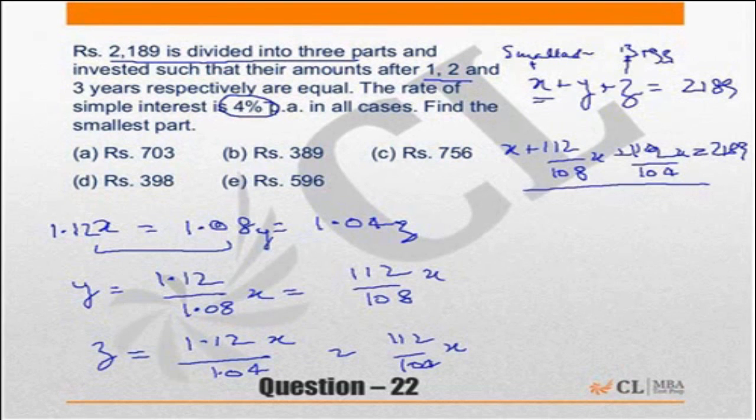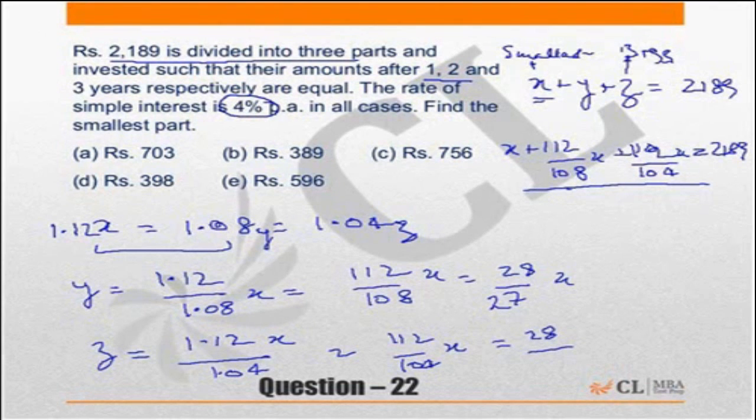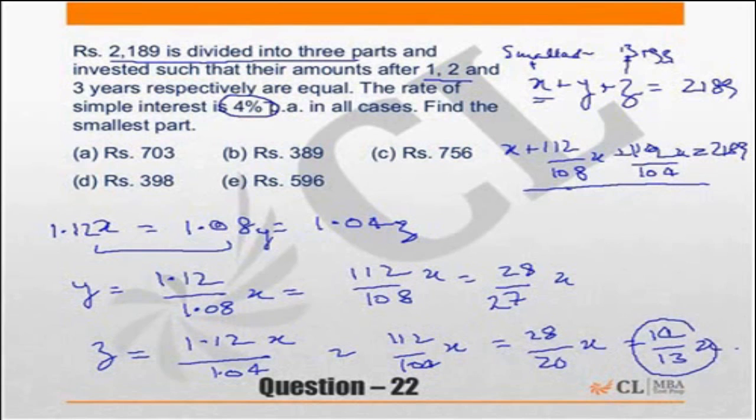Now, obviously if you look at the exact values of this, this will be a very difficult calculation. Why? Because this is effectively nothing but 28 by 27 x. And this is equal to 28 by 26 x, which is 14 by 13 x. You will have a difficult time calculating this. So the calculation is, why don't you approximate? Even if you have to do this, what is 14 by 13 equal to? 1 by 13 is 7.7 percent so 14 by 13 is 1.077. So, approximating it to 1.08 is not a bad option.